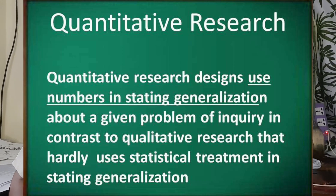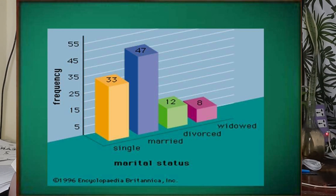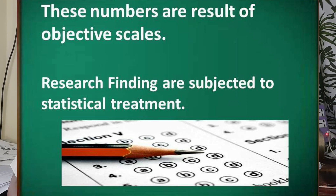For example, we have a sample showing: single 33%, married 47%, divorced 12%, widowed 8%. We have the numbers here — the frequency and the marital status. These numbers are the result of objective scales. When we say objective, it has choices and specific answers — for example, multiple choice or true or false in our academics.